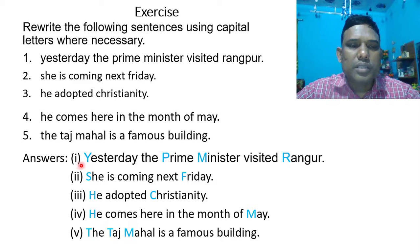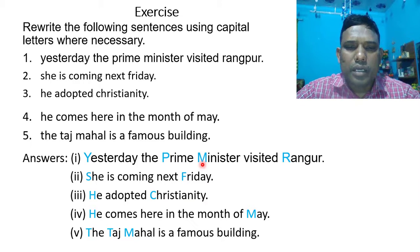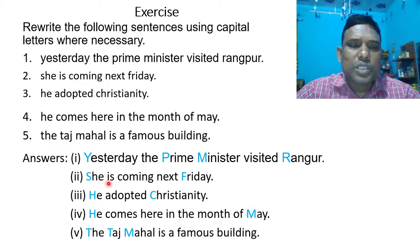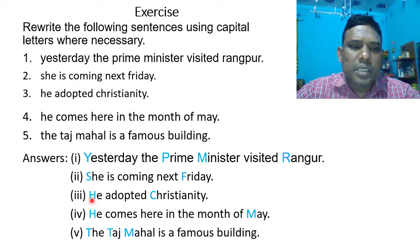Here are the answers. 1. Yesterday, the Prime Minister visited Frankfurt. The first letter Y in yesterday is capitalized as it starts the sentence. The first letter P in Prime and the first letter M in Minister are capitalized because Prime Minister is a title of high rank. The first letter F in Frankfurt is capitalized because it is the name of a place. 2. She is coming next Friday. The first letter F in Friday is capitalized because Friday is the name of a day. 3. He adopted Christianity. The first letter H in he is capitalized because it is the first word of the sentence.